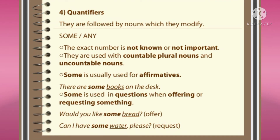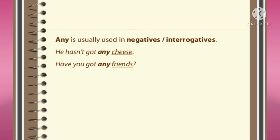The fourth type of determiners is quantifiers, which show measurement or quantity. 'Some' and 'any' are used before nouns. 'Some' is used before countable plural nouns and uncountable nouns: 'There are some books,' 'Would you like some bread,' 'Can I have some water.' 'Any' is used only in negatives or interrogatives: 'He hasn't got any cheese,' 'Have you got any friends.'